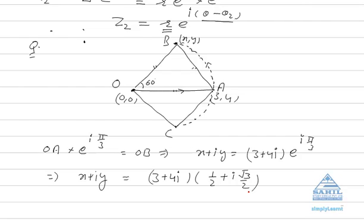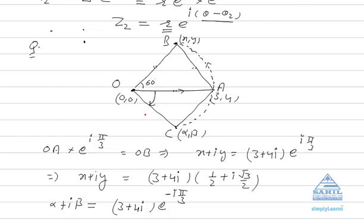To find the coordinates of C, suppose C is (alpha, beta). In a similar way, alpha + i·beta = (3 + 4i) × e^(−i·π/3), because now we rotate the complex number by 60 degrees in clockwise direction. So it equals (3 + 4i) × (cos(π/3) − i·sin(π/3)). By simple calculations you can find the real part, which is alpha, and the imaginary part, which is beta.